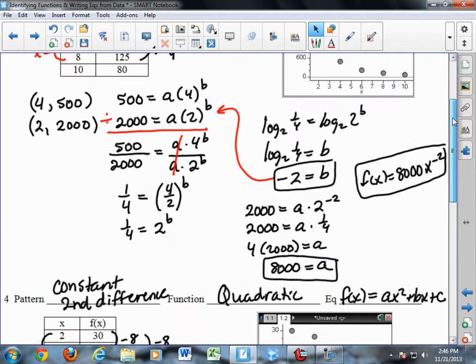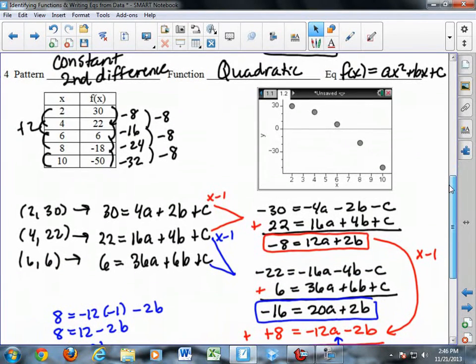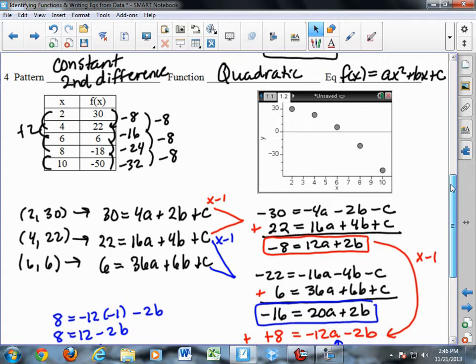Going to our third example, which is actually the fourth example in my notes here, but it's the third example on your notes. Quadratic. When you look at quadratic, you'll notice there's not a real distinct pattern here. If I were to try to multiply, there's no one number I could multiply to get from one value to the next in the y direction.